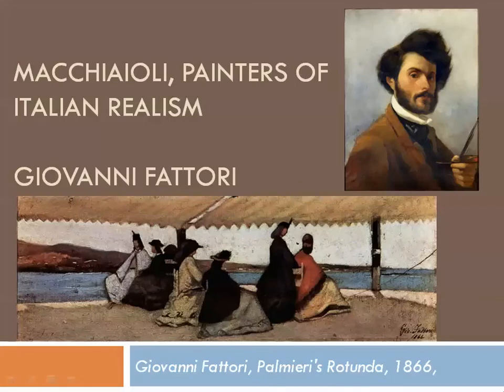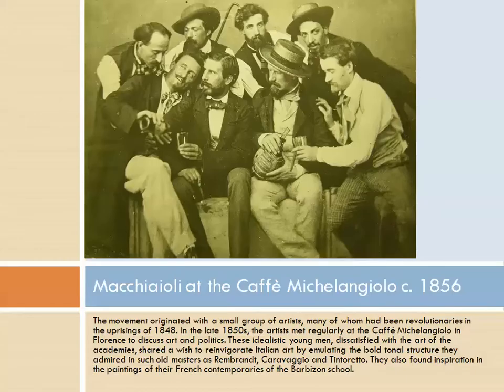The topic for this lesson is Macchiaioli and the painters of Italian Realism. In particular, I have chosen to focus on Giovanni Fattori for this introduction. Let's start by talking about what this movement was all about. Here we have a charming photograph of a collection of the artists that used to hang out in a café in Florence to discuss art and politics.